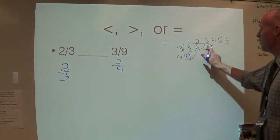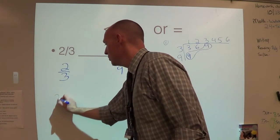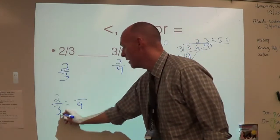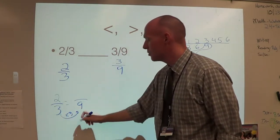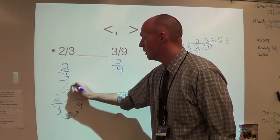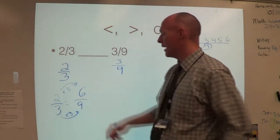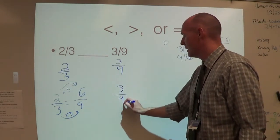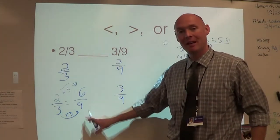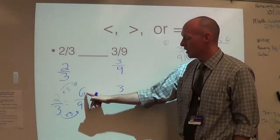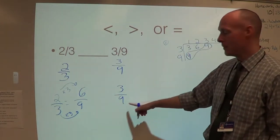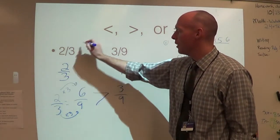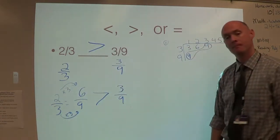Now we have to make them with denominators of nine. I have two-thirds equal to something over nine — how do I get from three to nine? Times three. Two times three is six, so my first fraction is going to be six-ninths. Three-ninths already has nine as the denominator, so we really don't have to do anything. We're comparing six-ninths and three-ninths. Six is larger, so we eat the six, and therefore two-thirds is greater than three-ninths.